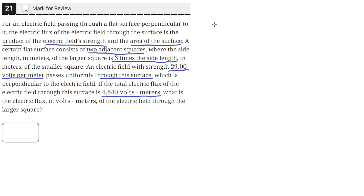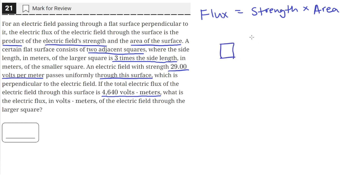So we're told that the electric flux is equal to the product of the field strength and the area of the surface. We're given that a certain flat surface consists of two squares — a small square and a larger square — and the sides of the larger square are three times that of the small square. So if we assign x to the length of the small square, then each side on the large square is 3x.